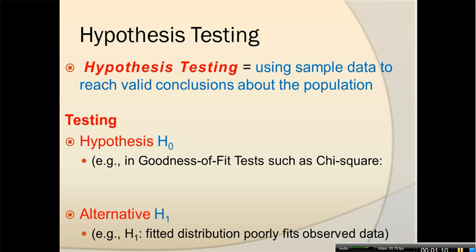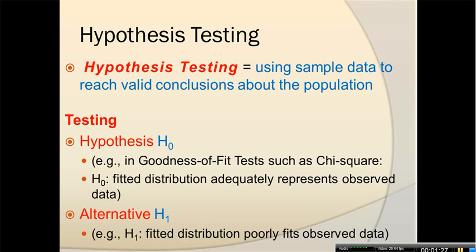To test hypothesis H0, we can apply goodness of fit tests such as chi-squared, or the Kolmogorov-Smirnov test. In the goodness of fit tests such as chi-squared, H0 states that a fitted distribution adequately represents observed data. For example, if I want to fit a normal distribution, I assume it accurately represents the observed data. The alternative H1 is that the distribution doesn't fit the data well and actually poorly fits observed data. There are only two alternatives: either a good fit or a poor fit — no other options.